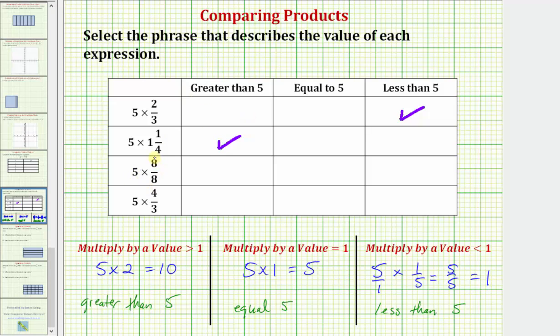Next we have five times eight-eighths. Here we need to recognize that eight-eighths is equal to one. So we multiply five by one, the product will equal five.